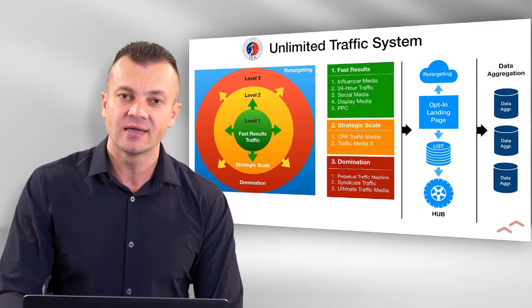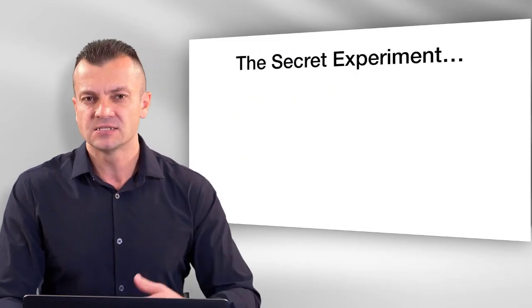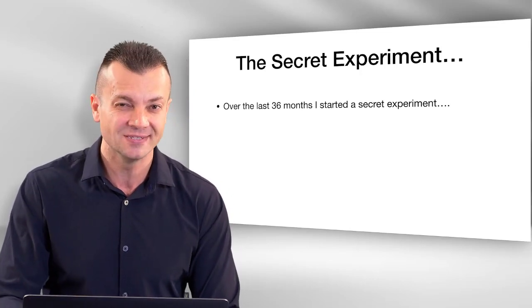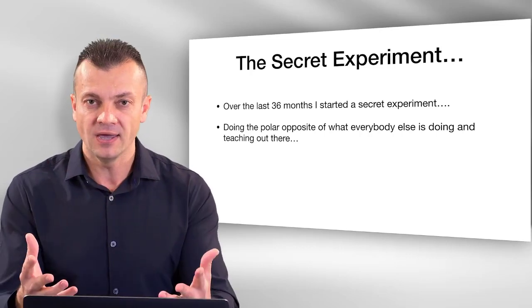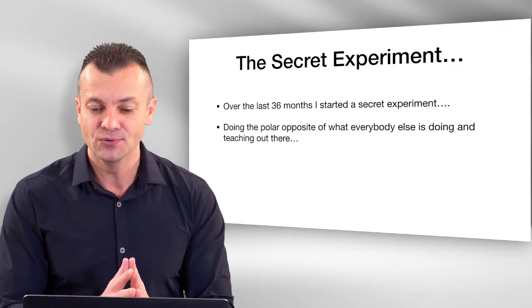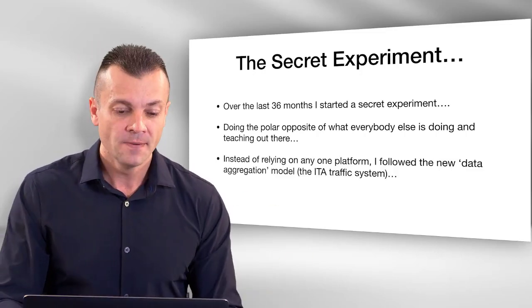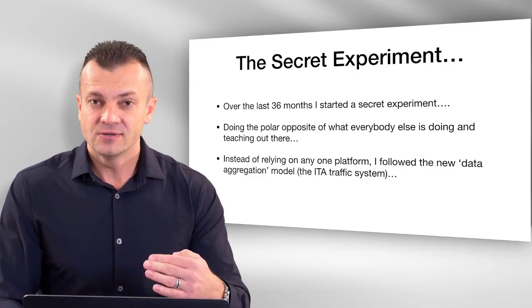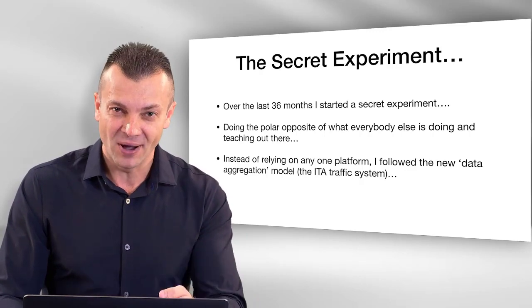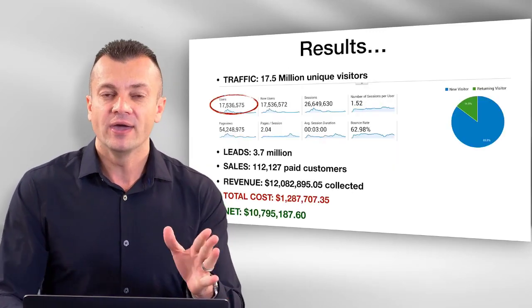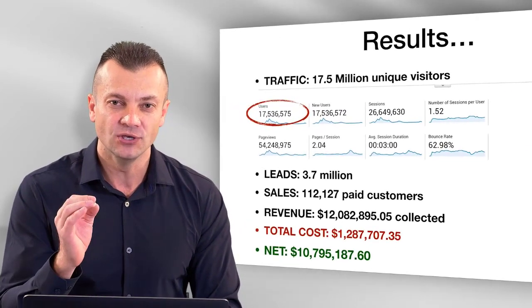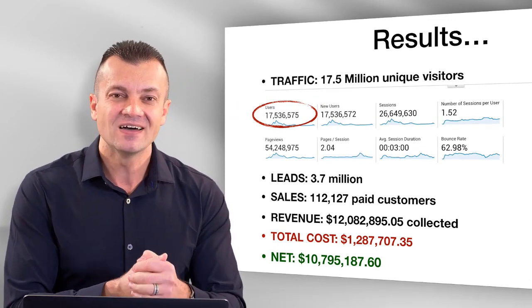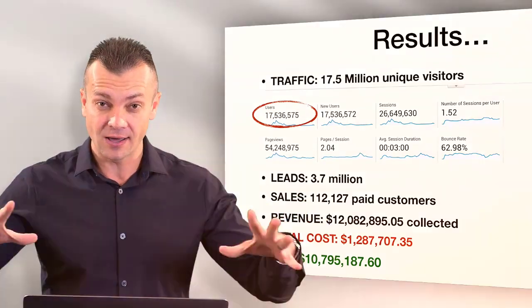It's not all bad news. While entrepreneurs following the old platform dependency model are struggling, those who implement the new model are experiencing record highs in traffic, leads, and sales. The old model is platform dependency — just running ads and hoping someone buys. The new model is called data aggregation, which focuses on three things: get traffic, manage traffic, and multiply traffic — very methodically and intentionally. I've been running a secret experiment on this model for 36 months. We generated 17.5 million unique visitors and 3.7 million leads.